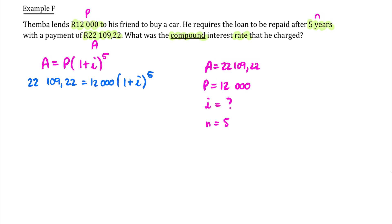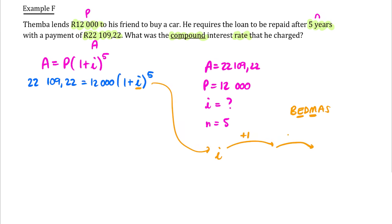Now that we've substituted into our formula, let's think about the algebra. We want to reverse what's happening to I. The first thing that happens to I is we add one because it's inside the bracket. Then, remembering BODMAS, we do exponents before multiplication — so the next operation is raising to the fifth power. Only after that do we multiply by 12,000 to get 22,109.22. Reversing these operations: divide by 12,000, take the fifth root, then subtract 1.